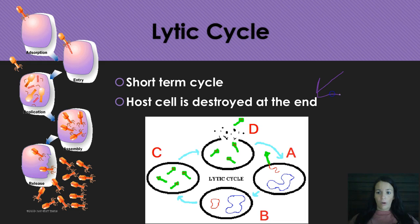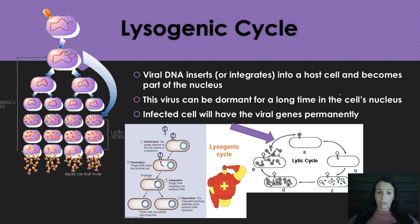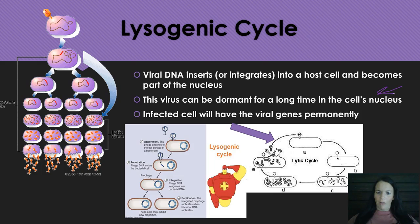In the lysogenic cycle, the DNA is integrated into the host cell and becomes part of it. It's also important to note that it can be dormant for a long time — you can get infected with herpes or HIV and never know you have it until symptoms appear, possibly even 10 years later. So it can stay dormant and then go through cycles.